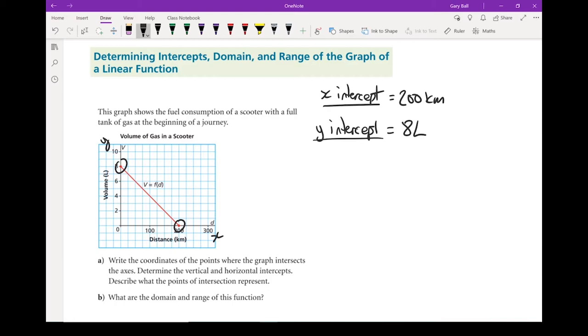What do those two numbers mean? Well, the y-intercept, this one right here, means we started with eight liters of fuel in the scooter. So when the distance is zero, we have eight liters of fuel in the scooter. This x-intercept here represents how far have we gone once we've used all eight liters, because at 200 kilometers, we have zero liters of fuel left.